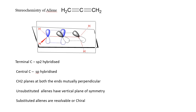Thus, allene gives its non-superimposable mirror image forms. Substituted allenes are resolvable or chiral. Unsubstituted allenes have a vertical plane of symmetry in each of the planes — each of the CH2 groups at the terminals will have a vertical plane of symmetry — and hence unsubstituted allenes are achiral, but substituted allenes are resolvable or chiral.